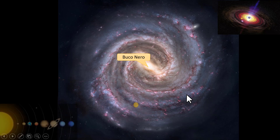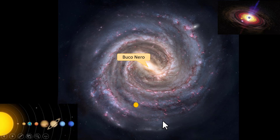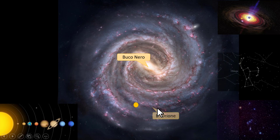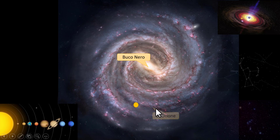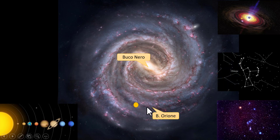Then there's the solar system. We are here, in this arm, which is called the Arm of Orion. This arm takes its name from the constellation of Orion, which is located more or less 1,500 light years from us.